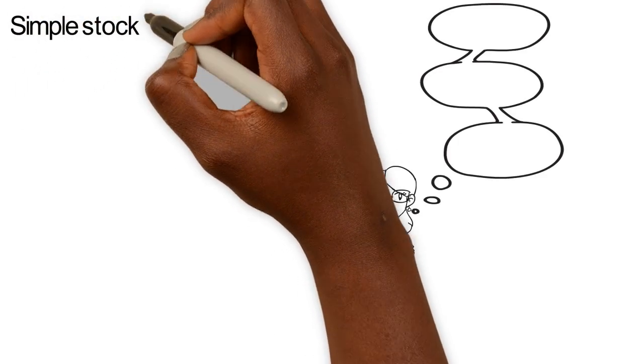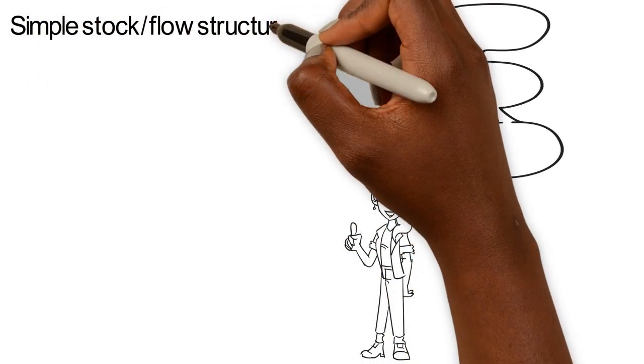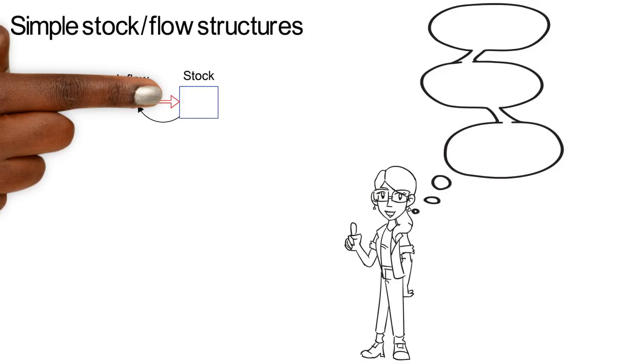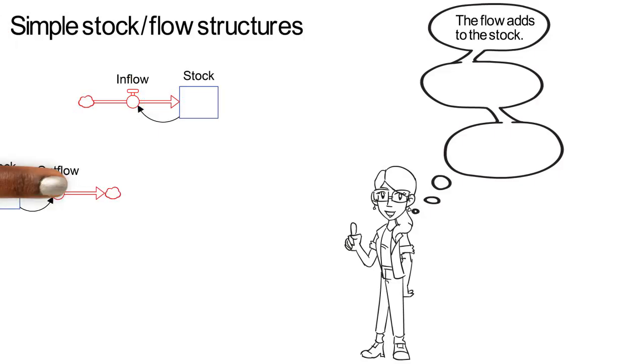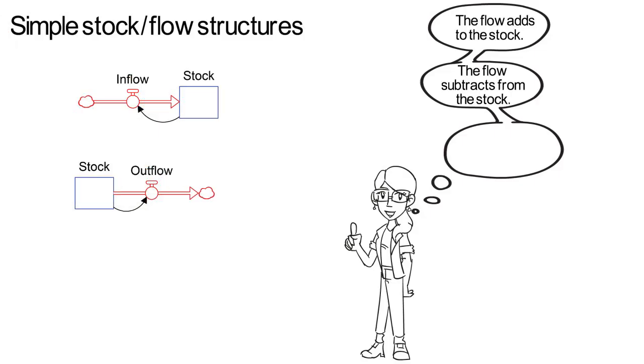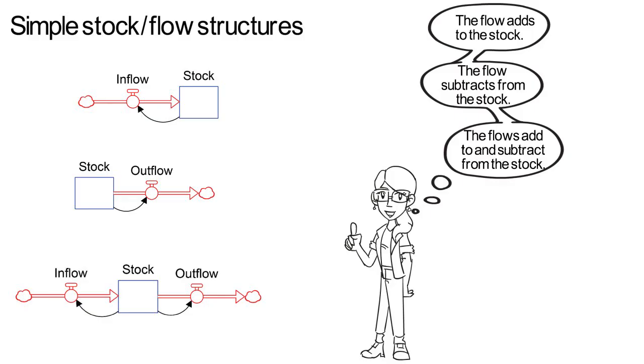We can show these accumulations as stocks that can go up and down. A stock with an inflow can go up. A stock with an outflow can go down. A stock with an inflow and an outflow can go up and down.